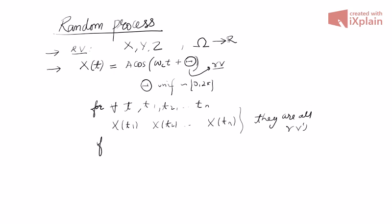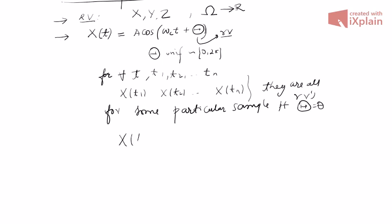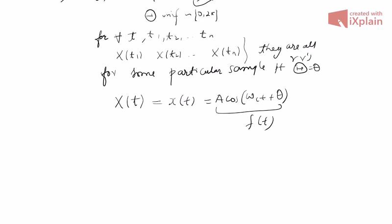For a particular sample point, suppose θ equals some specific small theta. Then for that sample point, X(t) takes a particular value: x(t) = a·cos(ωct + θ), which is now a function of time. In general, a random process is a function of both sample point and time.